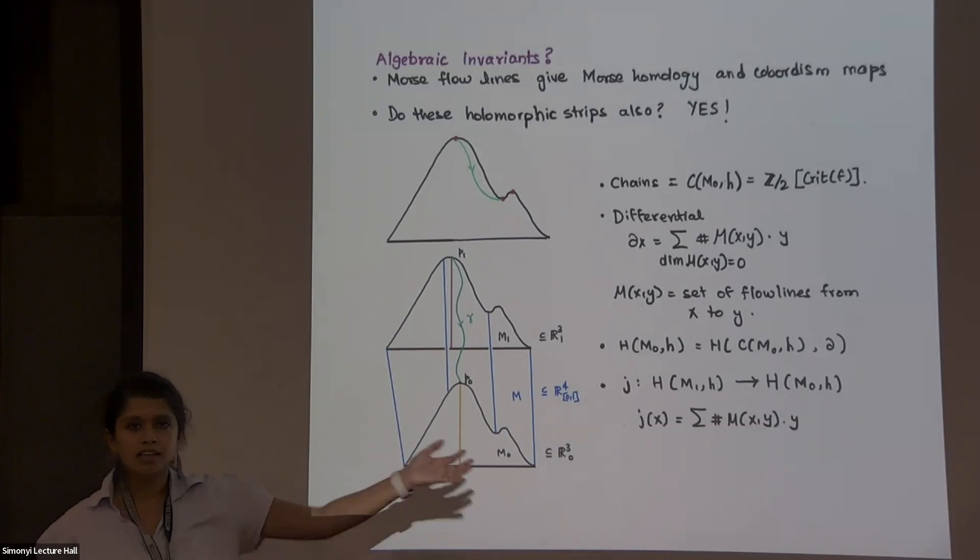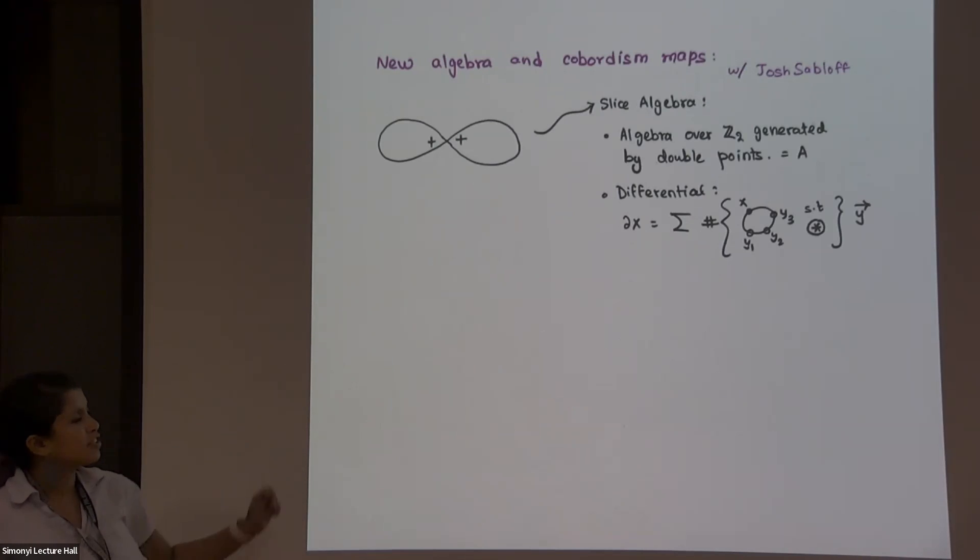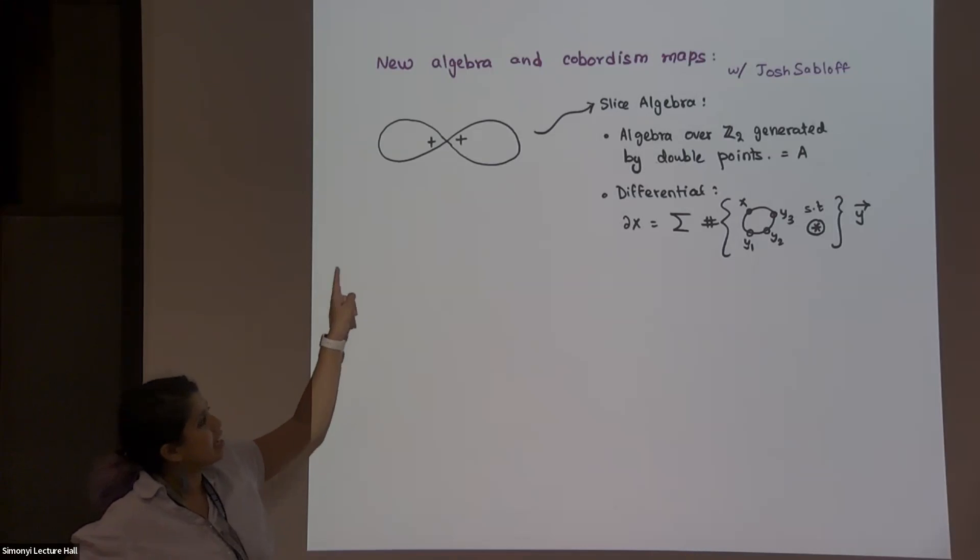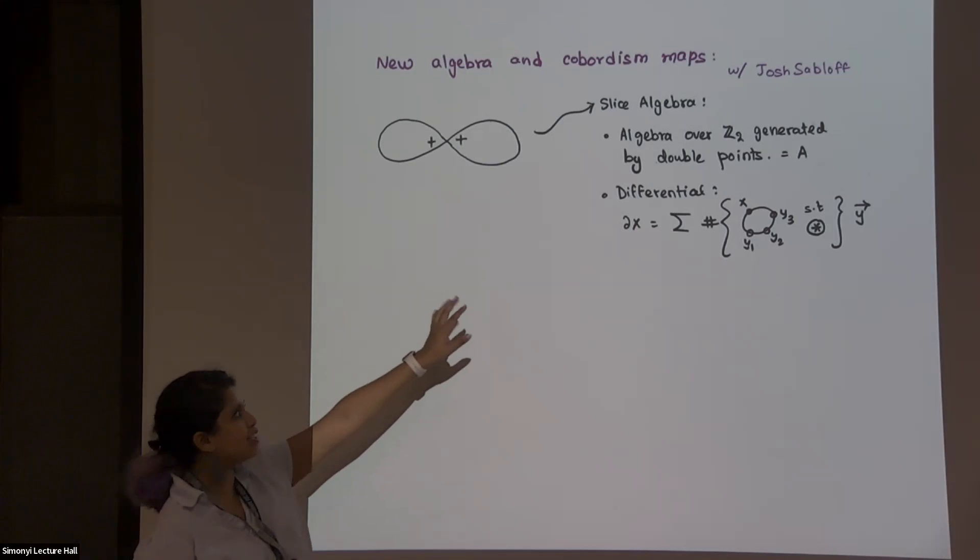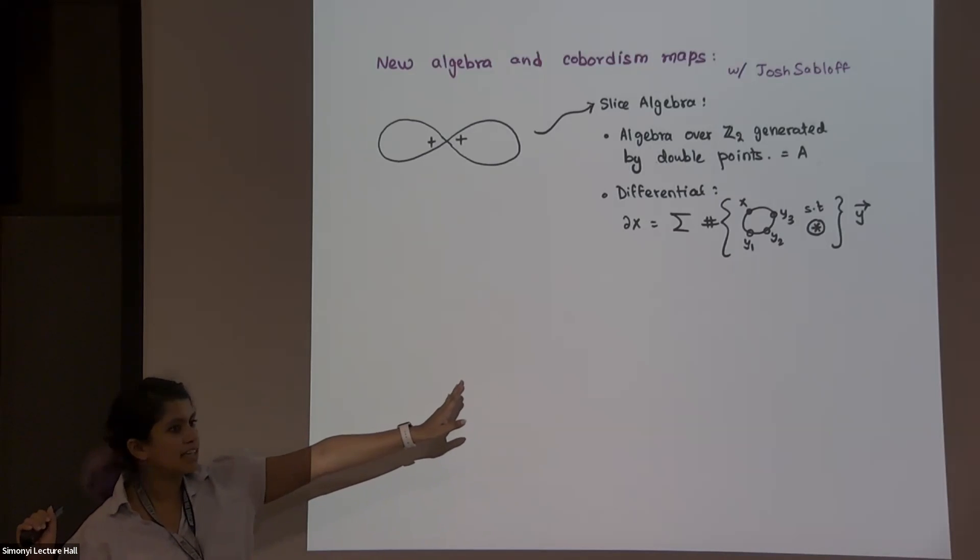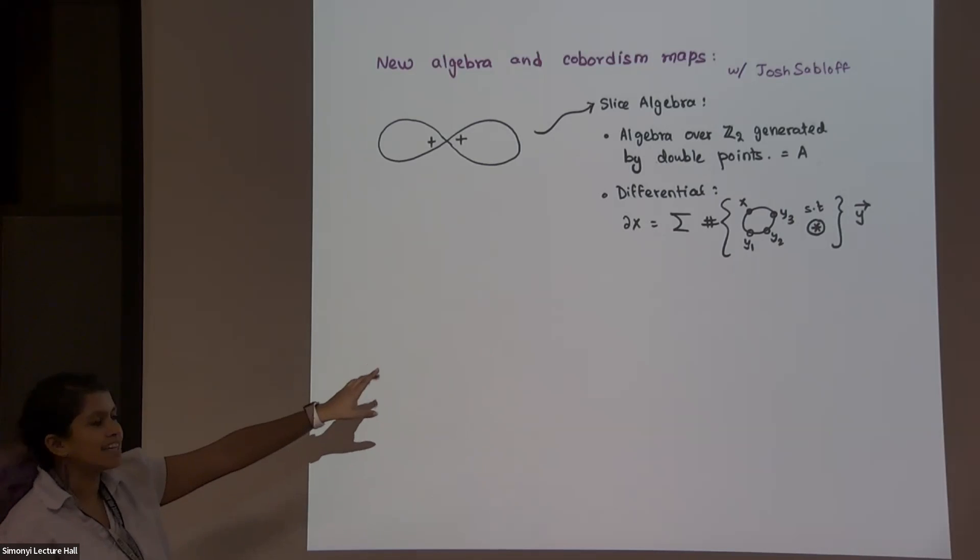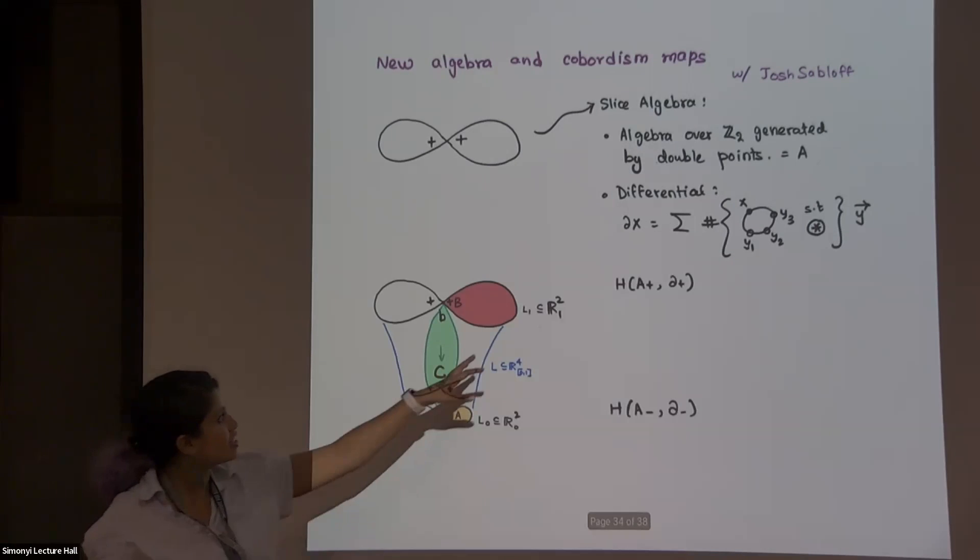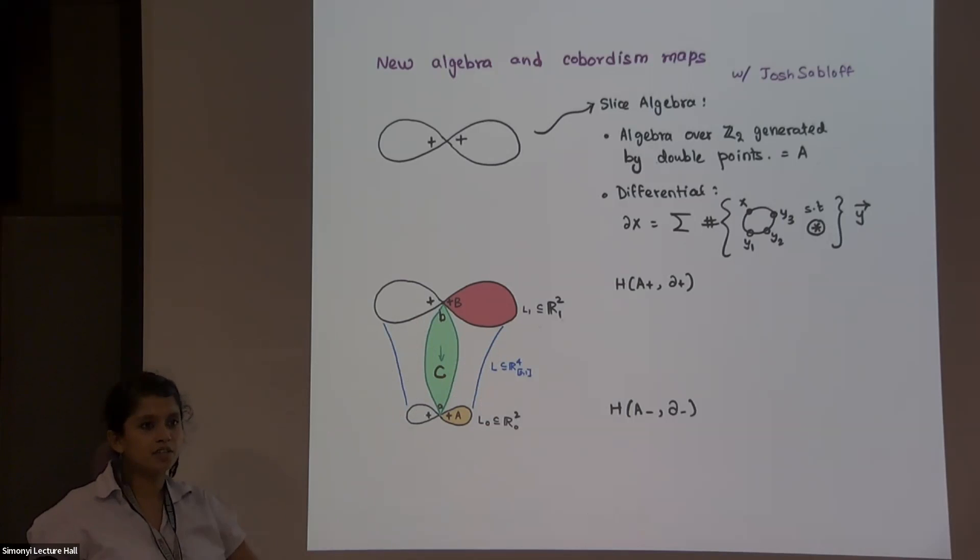And then if you have a cobordism, you could additionally count flowlines that go from the top copy to the bottom copy by arranging your gradient, your metric nicely. So that makes sense. And you can do similar things to get this map, which is a chain map. So it gives you a map between the homologies. Cool. Okay. So you want to extend this idea to the Floer setting. You take one slice. So that picture would just be the projection in R2. A one dimensional manifold in R2 is Lagrangian always for the standard form. And then instead of taking a module over Z mod 2, I'm going to take an algebra. So I'm allowing more things than just strips. That makes sense. But it's slightly more complicated.